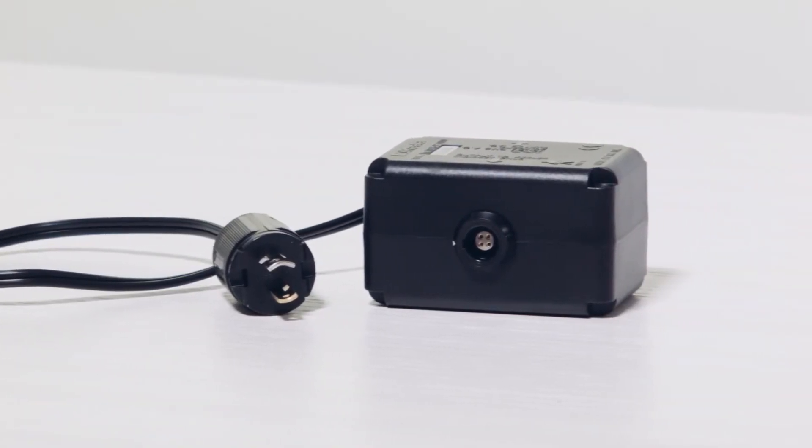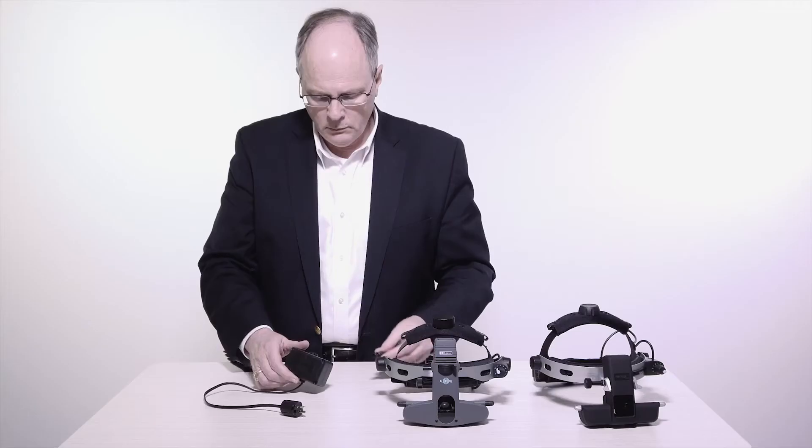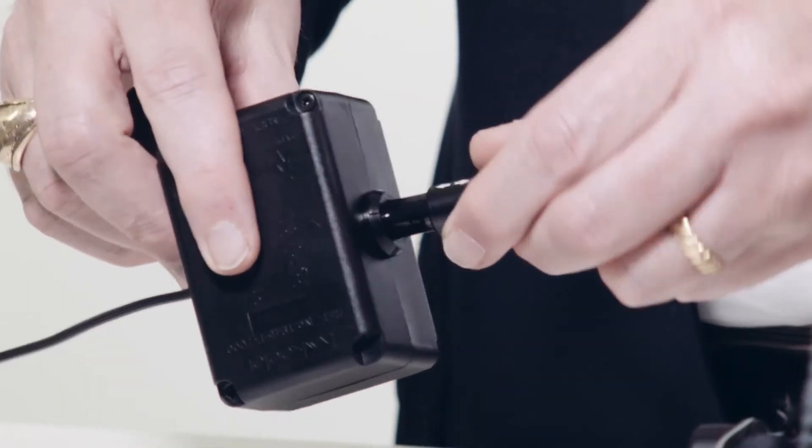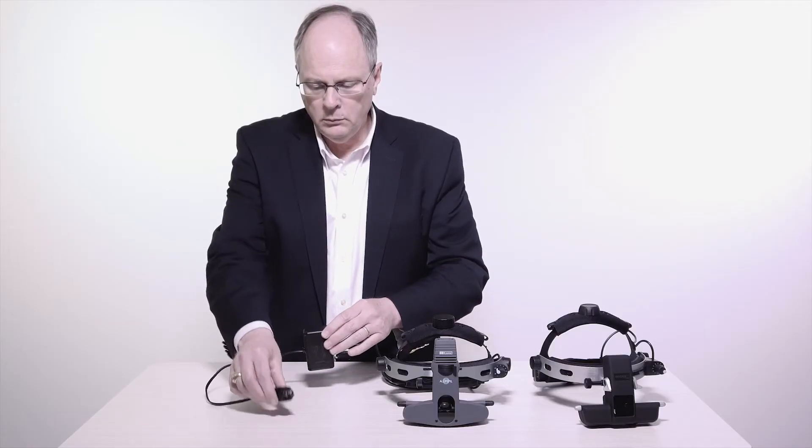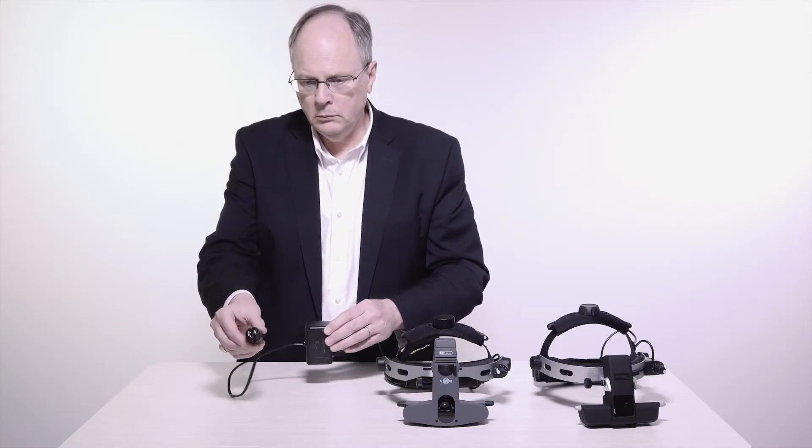All Pupil 2 or Vantage Plus wired units can be powered using your refraction stand. Depending on the configuration, you can attach a banana or hubble plug to your stand.